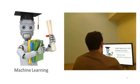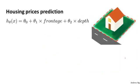Let's take the example of predicting the price of a house. Suppose you have two features: the frontage of the house and the depth of the house. The frontage is defined as this distance, basically the width or the length of how wide your lot is. And the depth of the house is how deep your property is.